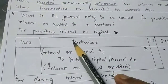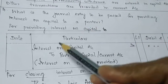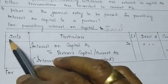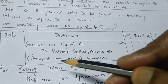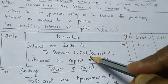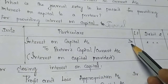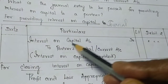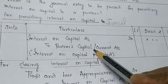Question: What is the journal entry to be passed for providing Interest on Capital to a partner? The entry is: Interest on Capital Account — debit to Partner's Capital Account or Current Account. Why Capital or Current Account? Under the Fixed Capital Method, it is transferred to the Current Account; under the Fluctuating Capital Method, it goes to the Partner's Capital Account.